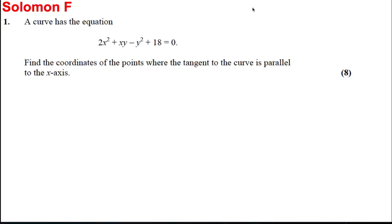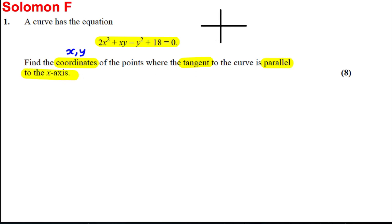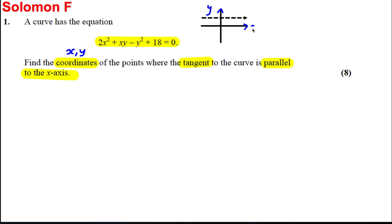Here's a question on implicit differentiation. We're given a curve with a certain equation and asked to find the coordinates — the x and y values — of the points where the tangent to the curve is parallel to the x-axis. If we think about what it means for a line to be parallel to the x-axis, it means the gradient m must be equal to zero. So we're looking for when dy/dx of the curve equals zero.